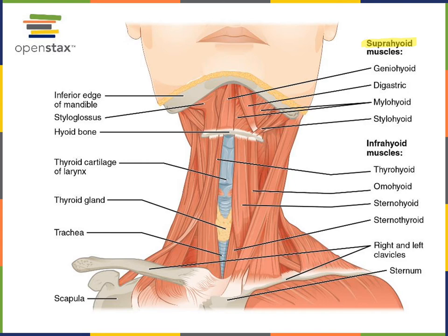The infrahyoid muscles — the thyrohyoid, omohyoid, sternohyoid, and sternothyroid — all have the action of depressing the hyoid bone and the larynx.